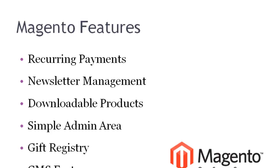Magento Go starts at around $15 a month for up to 100 products and goes up to about $125 a month for the highest package. Magento Enterprise starts at $15,000 a year and their Enterprise Plus edition starts at $49,000 a year, so it gets quite expensive. The Magento Community edition — the free version — is awesome, just like PrestaShop, and that's what I'd suggest for most developers.